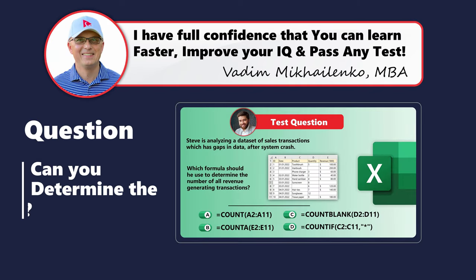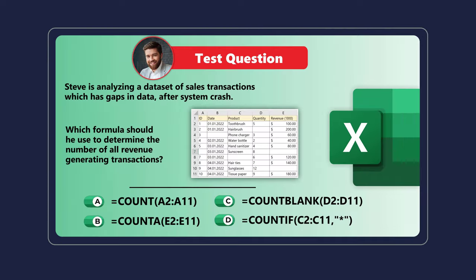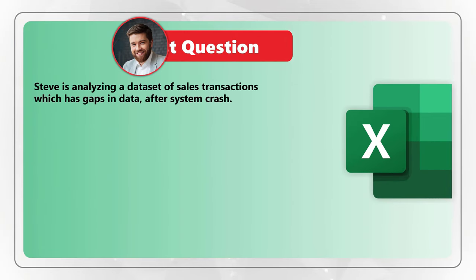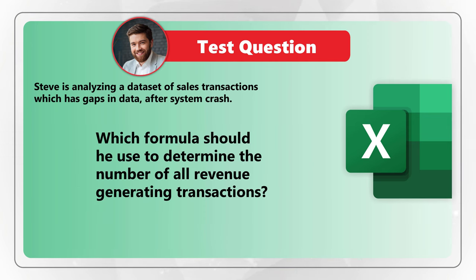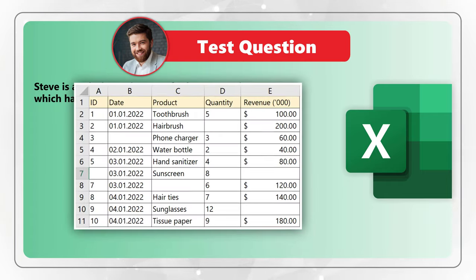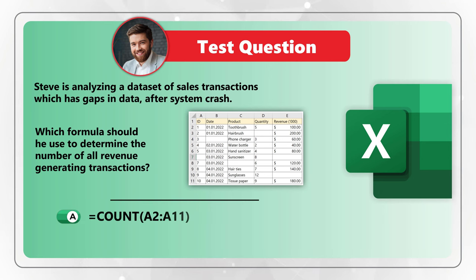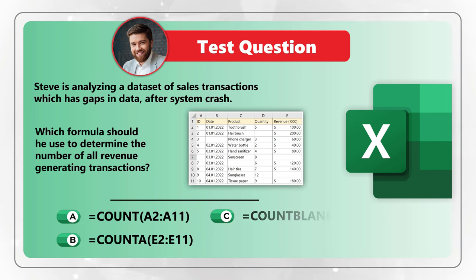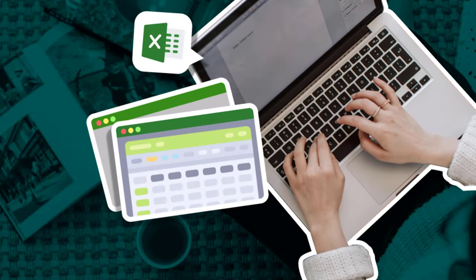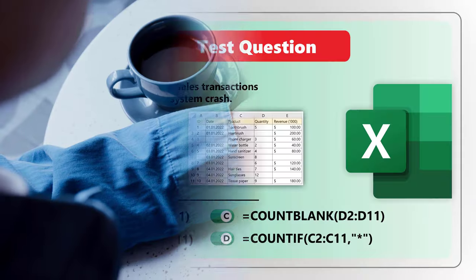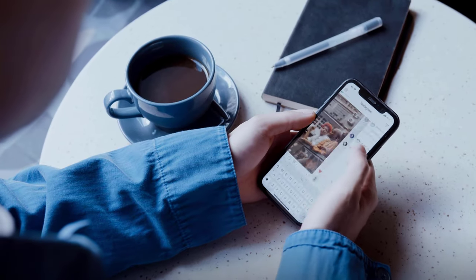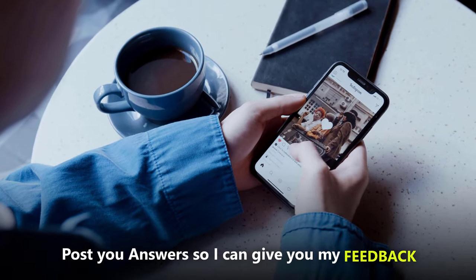Here's a question to test your knowledge. Steve is analyzing a dataset of sales transactions which has gaps in data after a system crash. Which formula should he use to determine the number of revenue-generating transactions? You are presented with the dataset and four possible choices: A, B, C, and D. Take a close look, make sure you understand the question, and select the right formula. Once ready, post your answer and solution in comments.